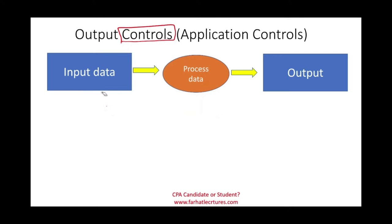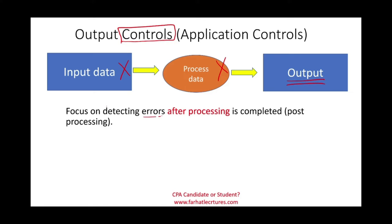In this session, if we did not catch the error at the input level or the processing level, we do have some output controls. But again, this is the last control that we discuss, because once the data is out there being used, if it's no good, then we failed at all three levels. So this is the last step. Here we're focusing on detecting any errors after processing. This is a post-processing step.